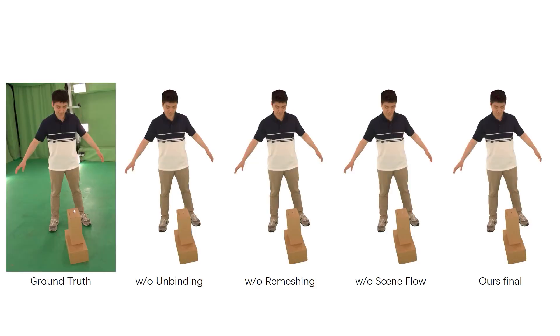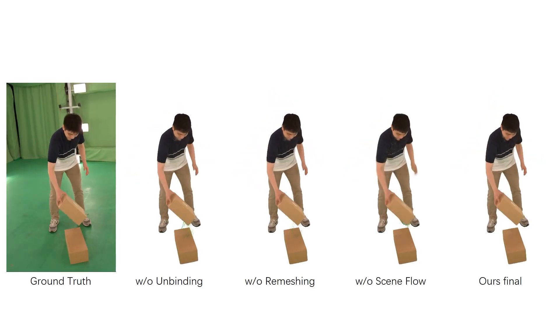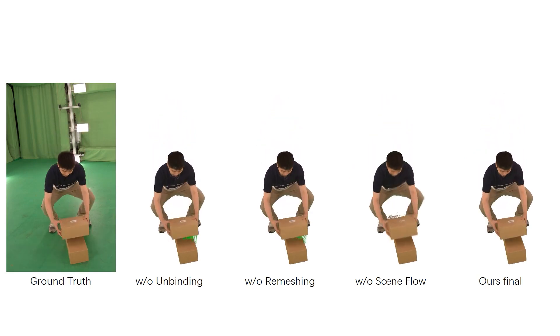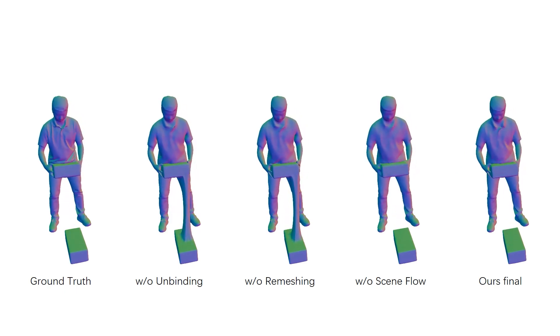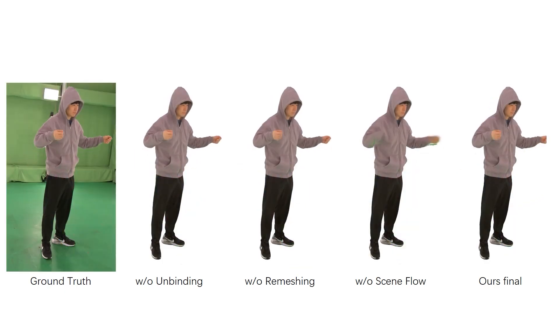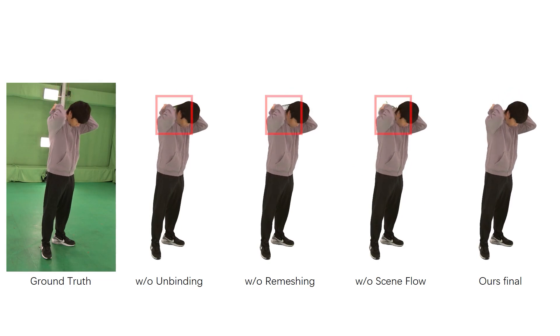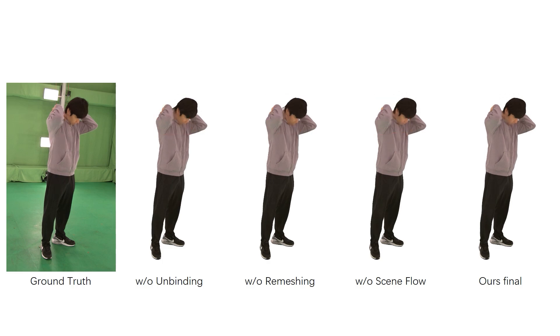Lastly, we examine the importance of each key component in Gaustar. These components include Gaussian unbinding, surface remeshing, and scene flow warping. Our experiments show that unbinding and remeshing enable robust handling of topology changes, while scene flow warping ensures accurate tracking of fast motions.